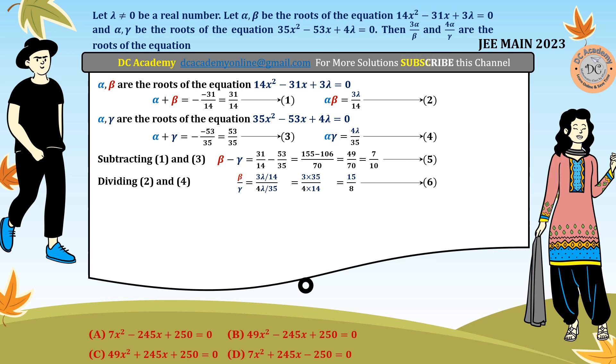From equations 1 through 6, our job is to calculate α, β, and γ. First, we concentrate on equation 5. If we divide both sides by γ, we get β/γ - 1 = 7/(10γ).